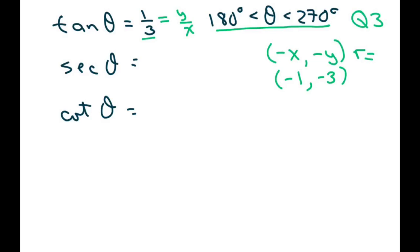Now secant is r over x, and cotangent is just the reciprocal of tangent, which is x over y. So we can do that one. We're just going to flip that. It's going to be 3 over 1, which equals 3.